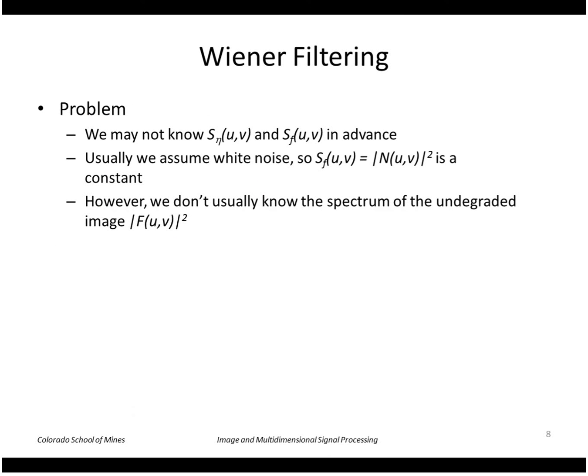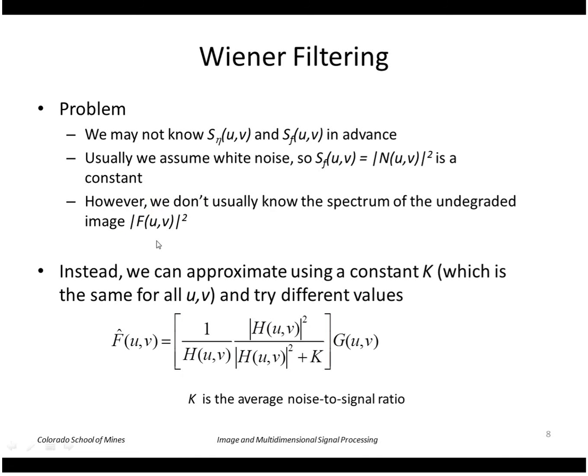A problem is that we may not know the power spectrum of the noise and the original image in advance. Usually we'll assume white noise though, so we can assume that S sub eta is a constant. However, we don't usually know the spectrum of the undegraded image S sub f. So instead, we'll approximate using a constant k, which is the same for all u and v. Instead of the ratio of S sub eta over S sub f, we'll just use some scalar value k. This is the average noise to signal ratio, instead of knowing the actual noise to signal ratio at each u and v.